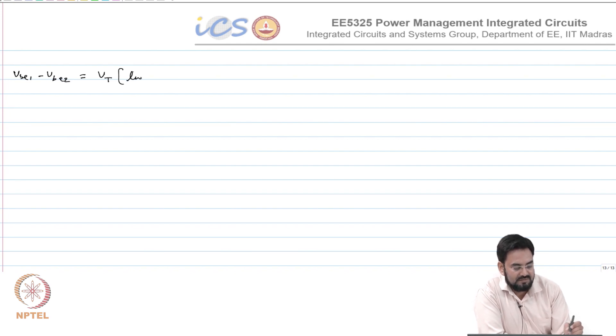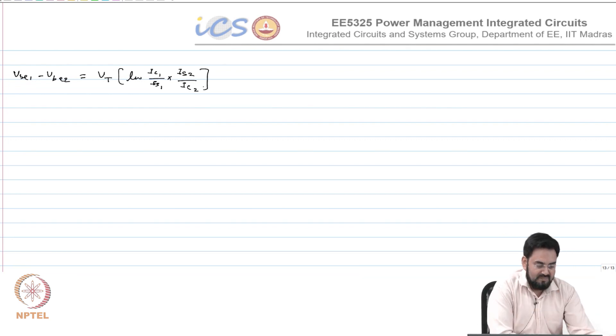VT ln of IC1 by IS1 multiplied by IS2 over IC2, and I can call it delta VB because I am looking at the difference of the two.